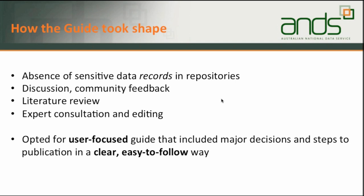So how did the guide take shape? We noticed an absence of sensitive data records in repositories, including our own in Research Data Australia. We had community feedback and discussion around this, review of the literature, and much consultation and editing with experts in legal and ethical fields, as well as experts in particular forms of sensitive data such as ecological data. We opted for a user-friendly guide that included major decisions and steps to publication in a clear, easy-to-follow way, based around a flow diagram or decision tree.